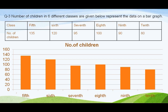Along the x-axis, aapne classes show ki hain: 5th, 6th, 7th, 8th, 9th, and 10th. Dhyan rakhna hai, the gap between each bar should be same. By default, yaha pe gap kam hai — aapne sabhi jagah gap same rakhna hai.